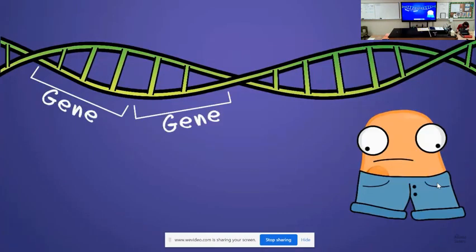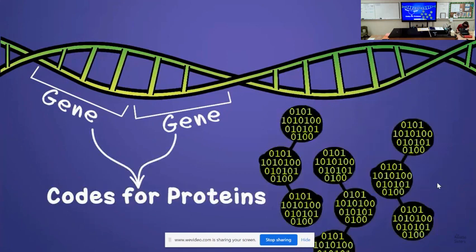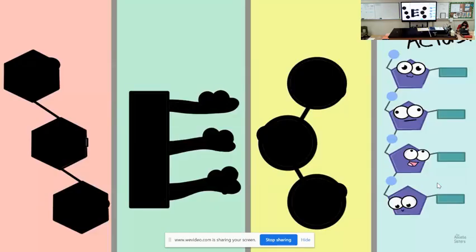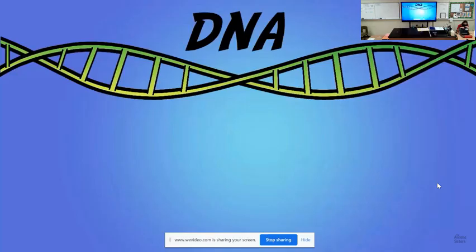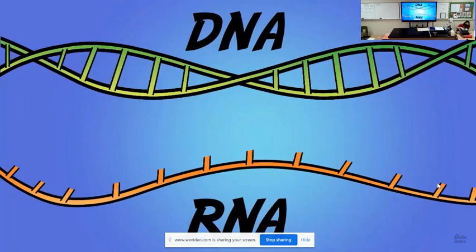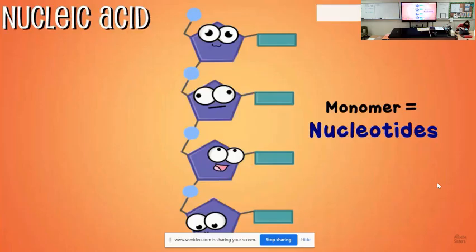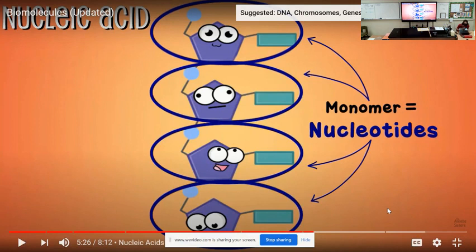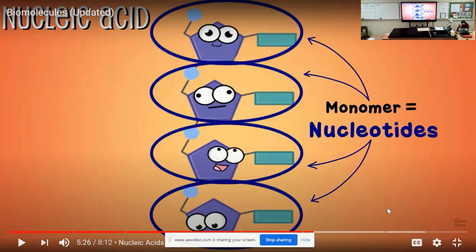Enzymes are a major role of protein, so proteins are very important for the body. When we talk about genes, the DNA codes for proteins that are very important for structure and function in the body. The last biomolecule is known as a nucleic acid. Nucleic acids include DNA and RNA, which we'll get to in genetics. They have a monomer called a nucleotide. Examples of nucleic acids include DNA and RNA.